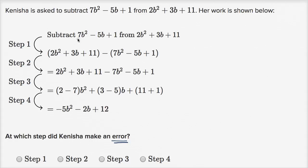So the first thing is we want to subtract 7b squared minus 5b plus one. We want to subtract that from 2b squared plus 3b plus 11. And we see that in step one, she set it up properly.